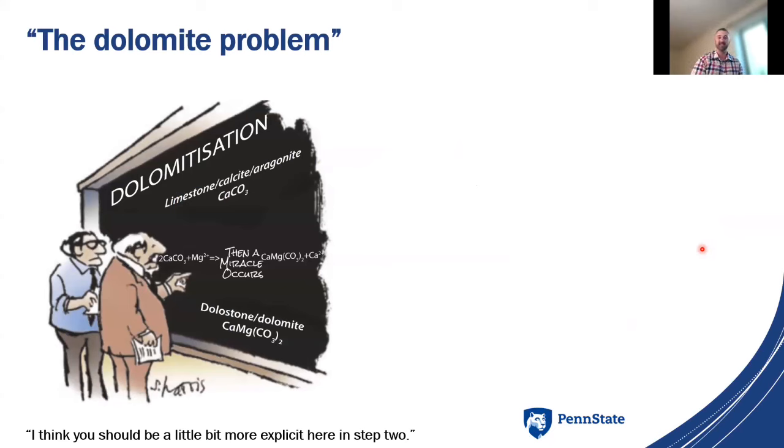This occurs because ordered dolomite is widespread in the geological record, but we've never been able to synthesize it in the laboratory under low pressure, low temperature, ambient conditions. Ordered dolomite also very rarely forms in modern settings, so why is it so abundant in the geological record?